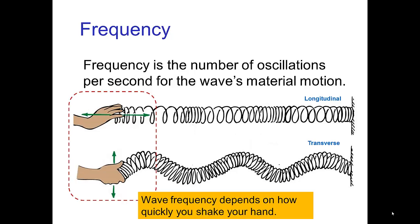The frequency is the number of oscillations per second for the wave's material motion. If we were creating waves on a slinky, then how rapidly we were shaking the end back and forth would determine the frequency.